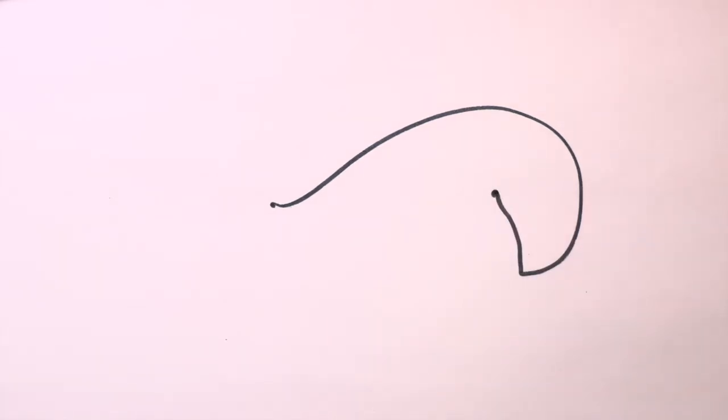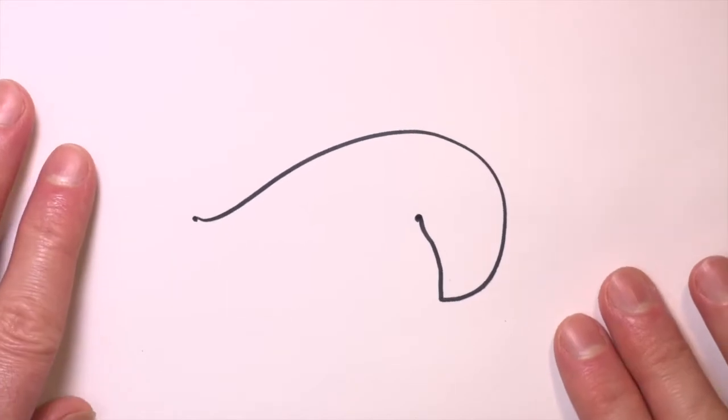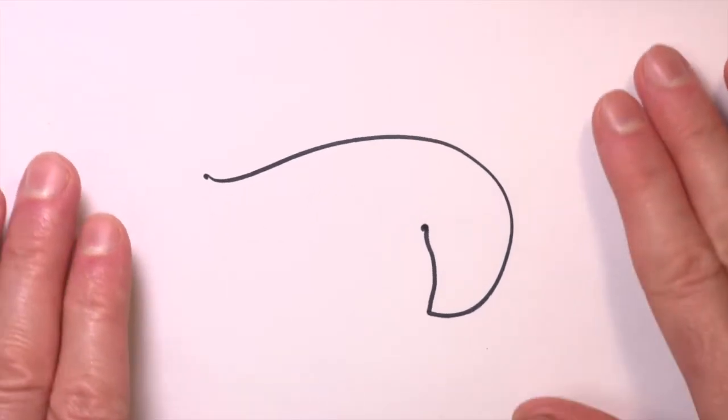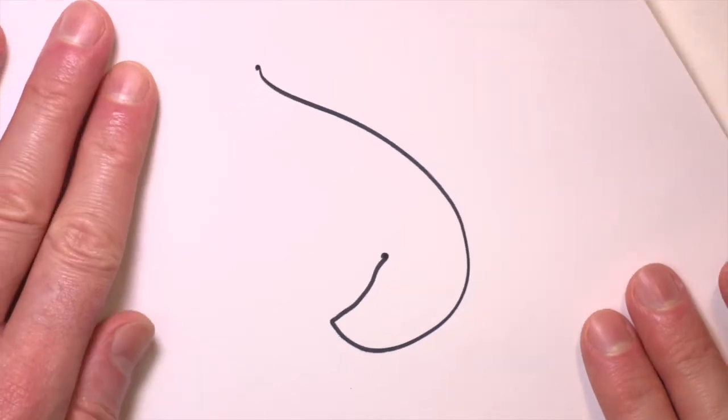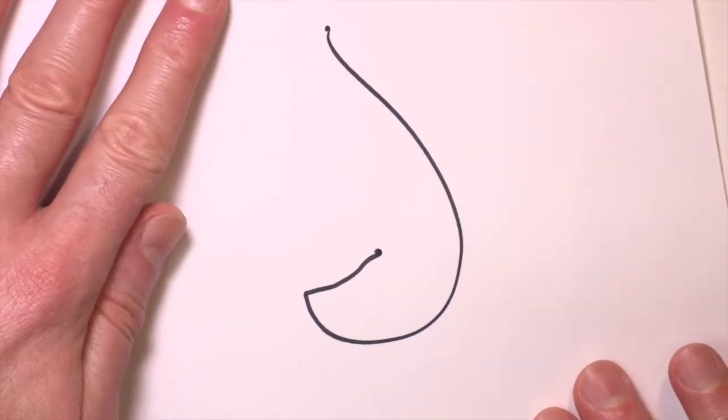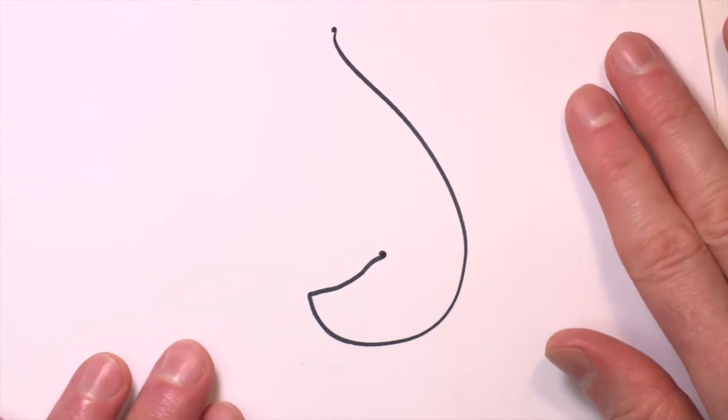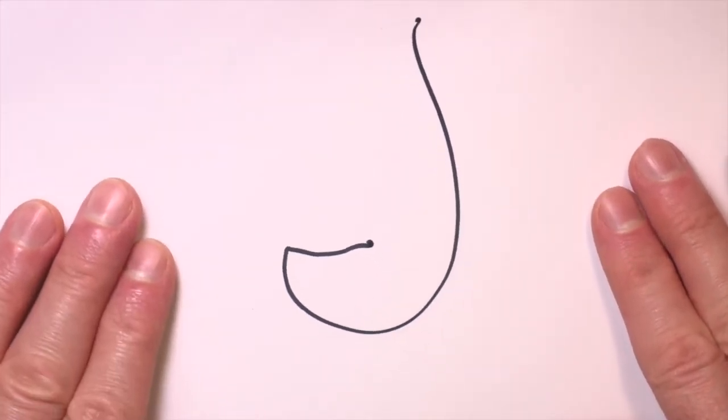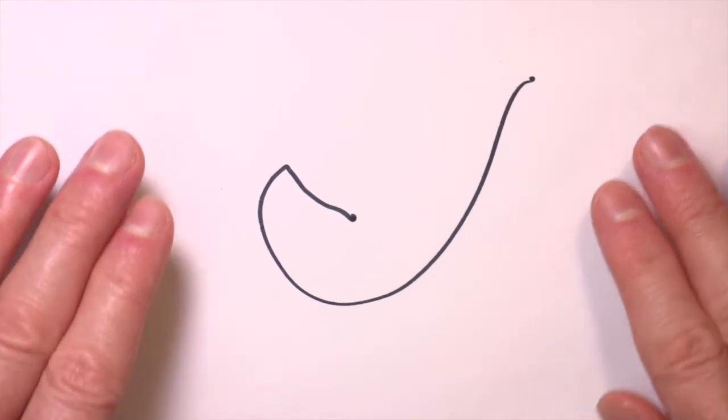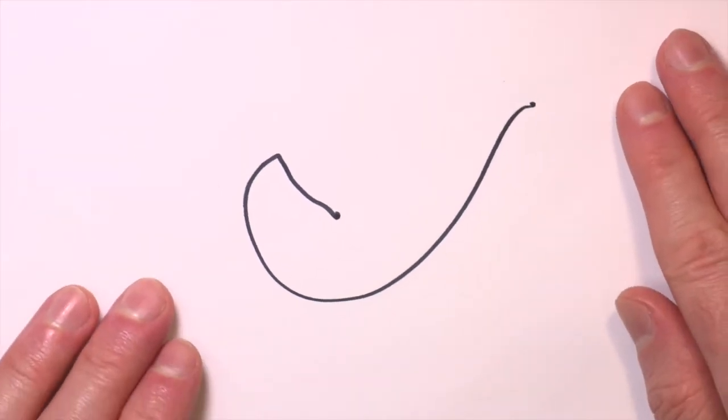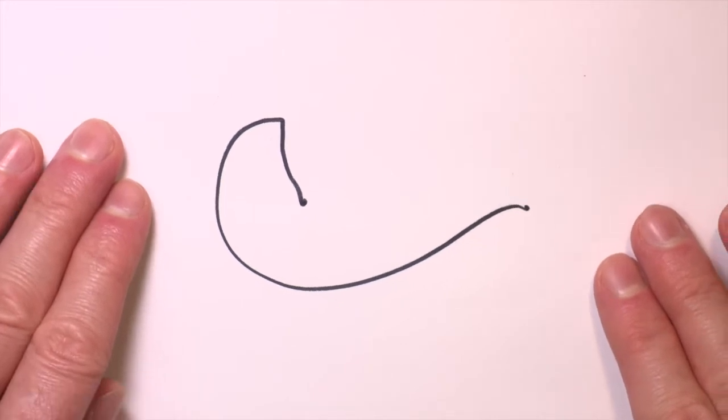This will be the first line of my drawing, so now I'll look at it and see what ideas come to mind for what I could turn it into. I'll rotate it because you get different ideas looking at it from different angles. It looks a bit like a letter J, or it could be an elephant's trunk, or an animal with a long tail.